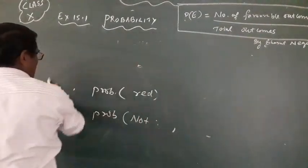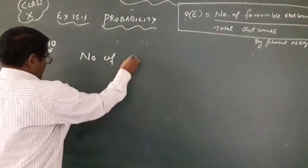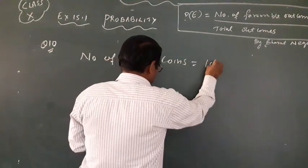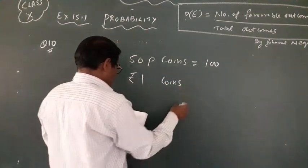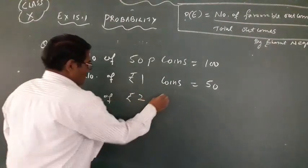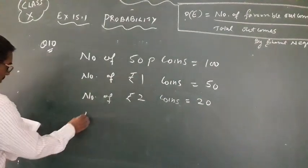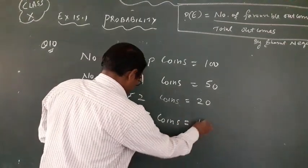Question number 10. Number of 50 paise coins, how many 50 paise coins here? Here are 100, total 100 50 paise coins. Then number of rupees 1 coins, 50. Number of rupees 2 coins, 20. Number of rupees 5 coins, there are 10.